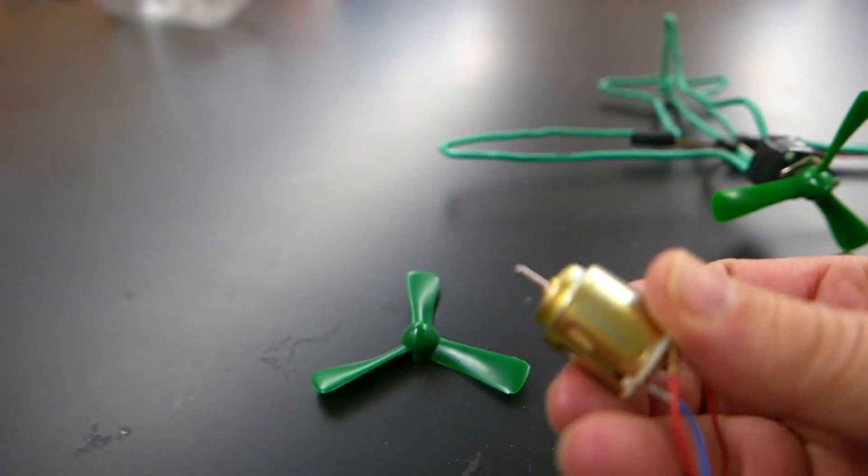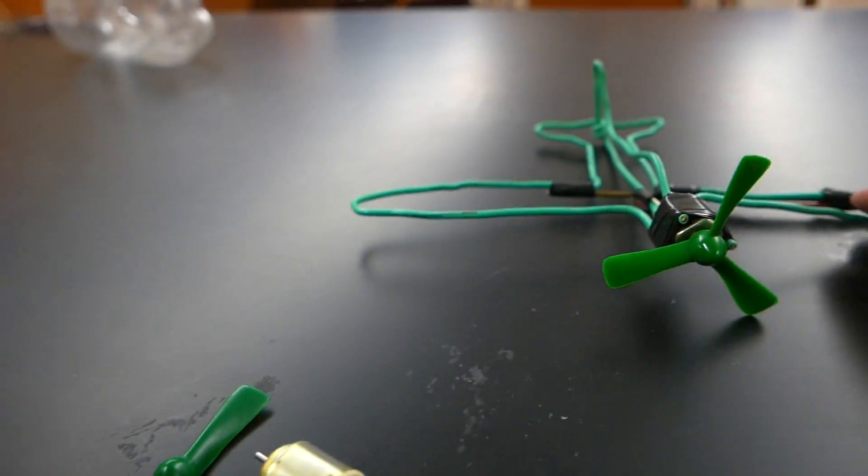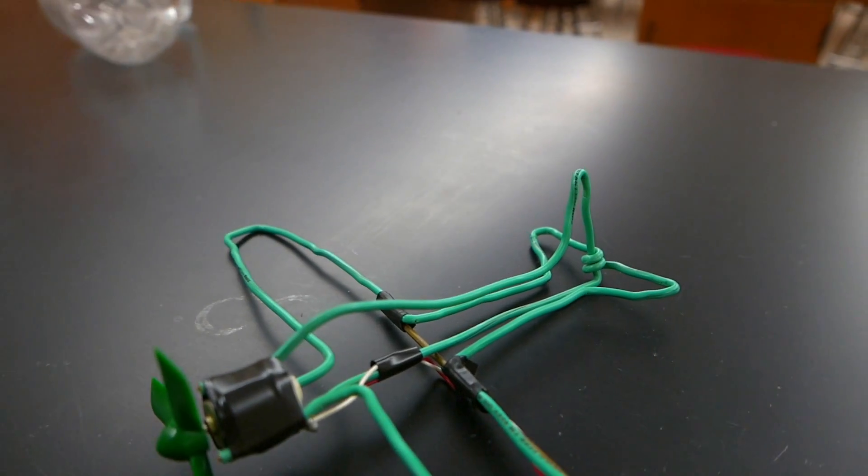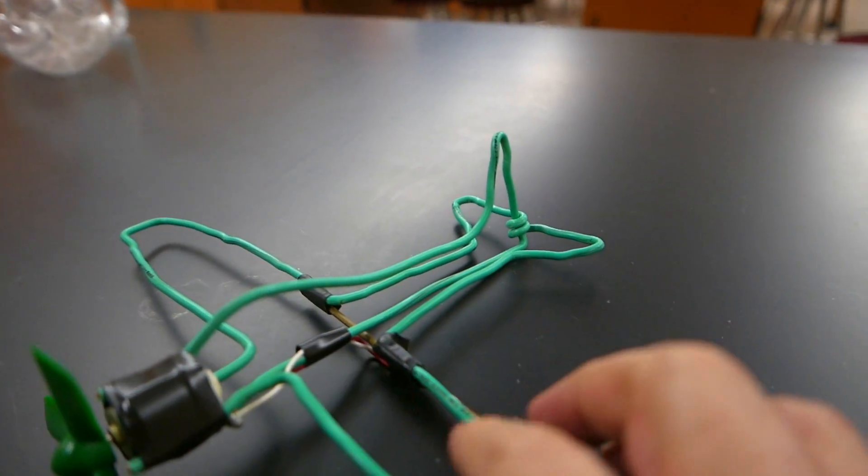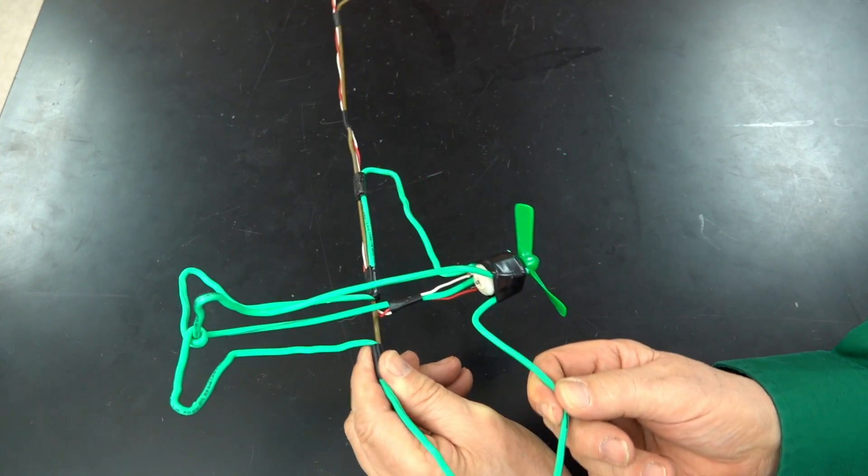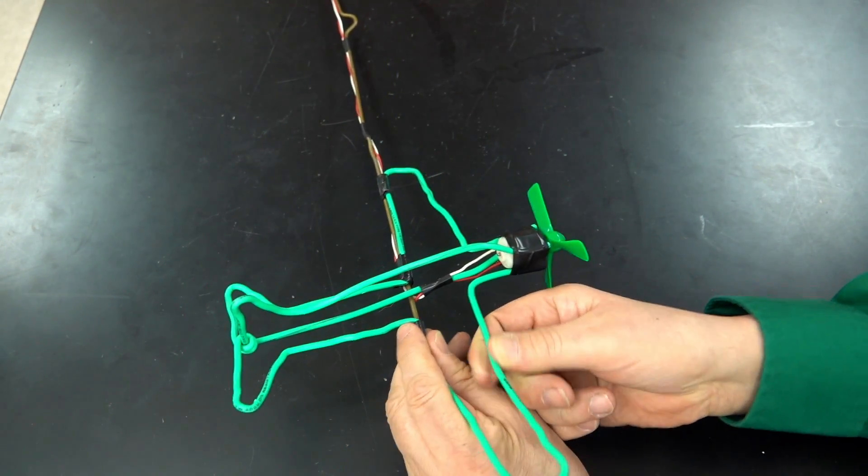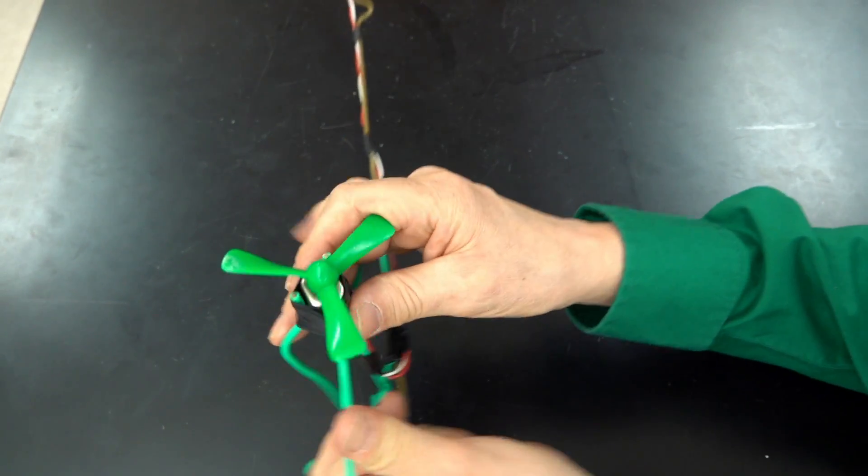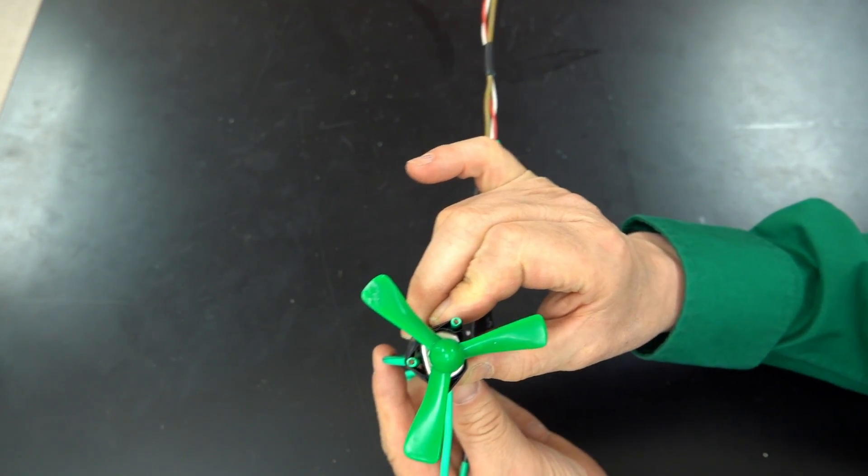This project starts with a small electric motor and a propeller. The plane's body is made out of either 10 or 12 gauge copper wire, which is available at either building supply stores or hardware stores. Now this wire is easy to bend, so it's very easy to shape it into the form of the airplane.